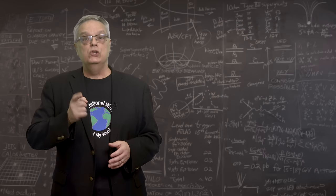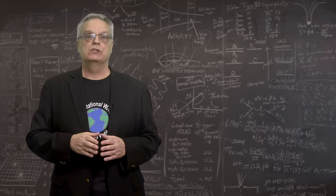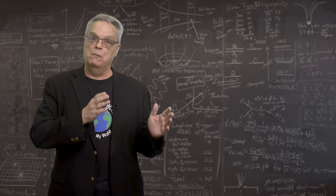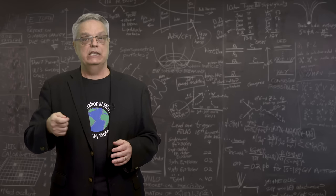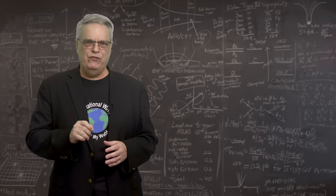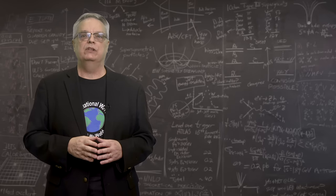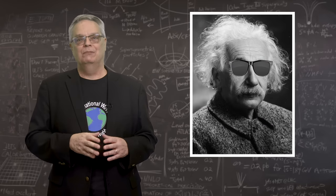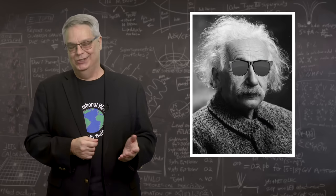So there you have it. Using what is called multi-messenger astronomy, which is when researchers combine information from different kinds of detectors, we now have a very precise measurement of the speed of gravity. Einstein's conjecture back at the beginning of the 20th century was true.